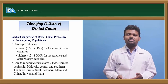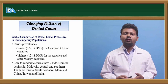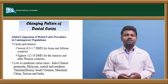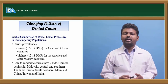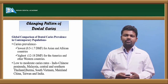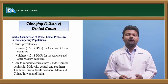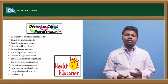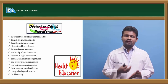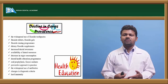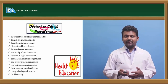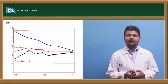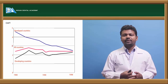Caries rate in contemporary isolated populations showed relative freedom from dental caries. Global comparison of dental caries prevalence in contemporary populations: lowest is 0.5 to 1.7 DMFT for Asian and African countries, and highest is 12 to 18 DMFT for American and Western countries. Low to moderate caries rates were found in Indo-Chinese, Burma, South Vietnam, mainland China, Taiwan, and India. The decline in prevalence of caries is associated with widespread use of fluoride toothpaste, fluoride lozenges, fluoride tablets, fluoride mouth rinses, fluoride dietary supplements, water fluoridation, and changes in diagnostic criteria. In developing countries, there was high prevalence of dental caries at the end of the 1980s, with a slight decline followed by a slight increase.